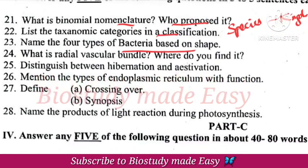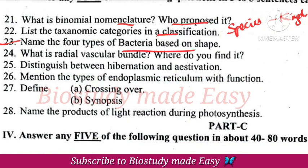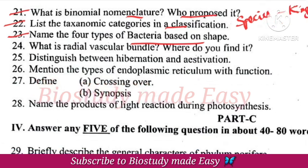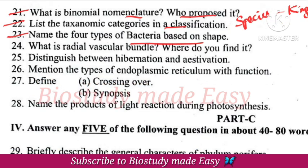Four types of bacteria based on shape — this is an important question. Radial vascular bundle — this is seen in the dicot or monocot stem.